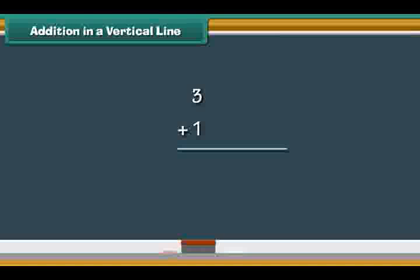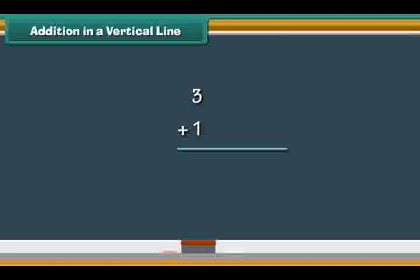What is three plus one? Write the two numbers one below the other. Draw three vertical lines next to three and one vertical line next to one. Count the vertical lines: one, two, three, four. Three plus one is four.